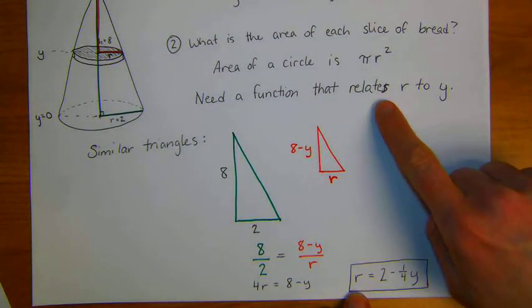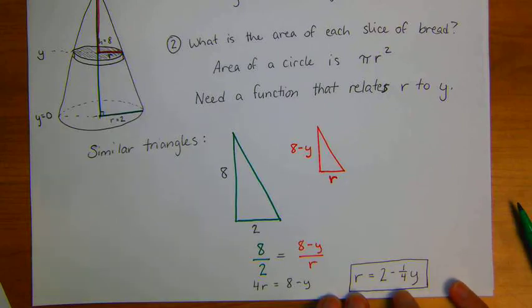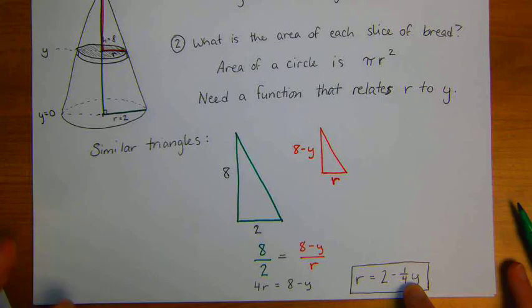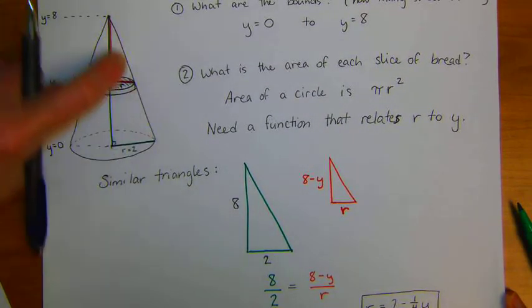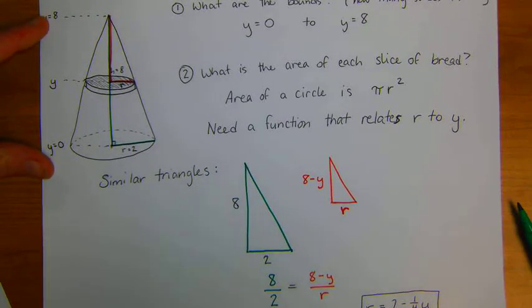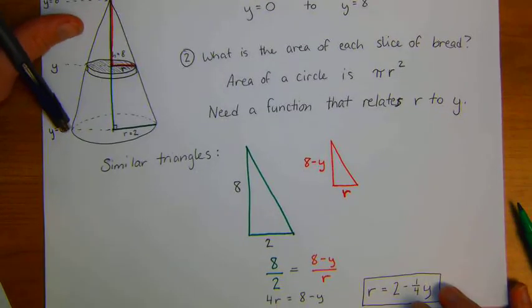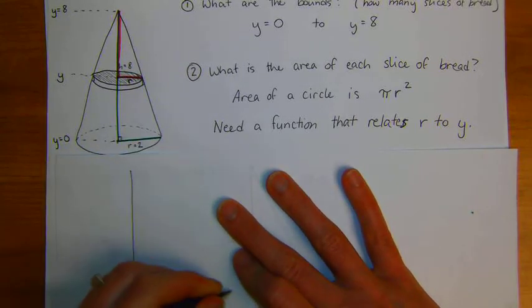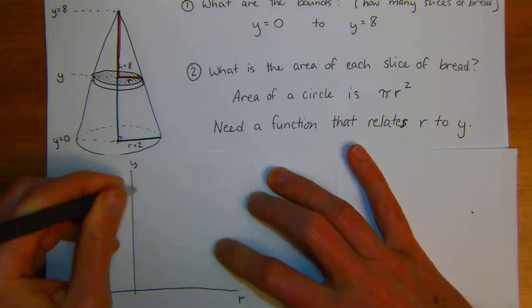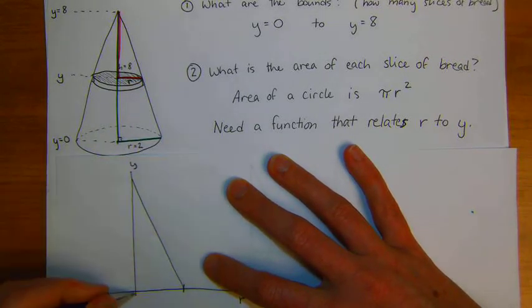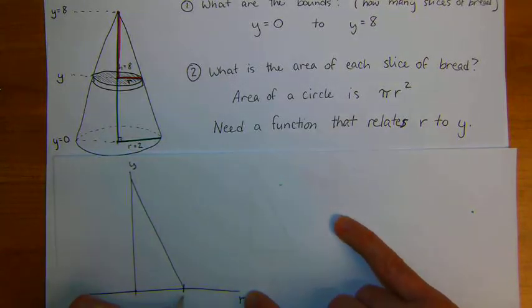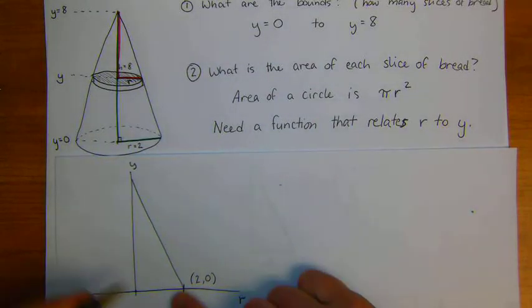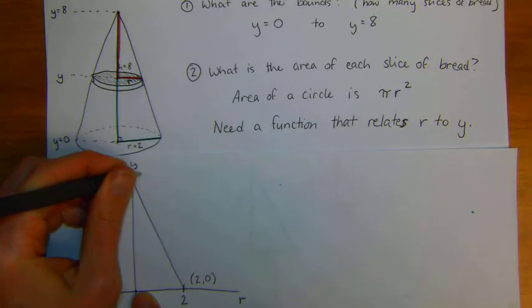Another way to think of finding the function that relates r to y is using the fact that this side length is actually a linear function. It's a linear function, but we want to think of y as the input for this linear function. I could think of graphing this on the ry axis. We see that down here when y equals 0, r is equal to 2. And when y is equal to 8, that's when r is equal to 0.